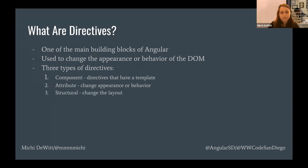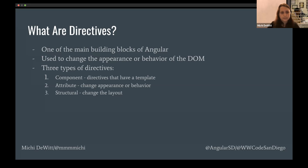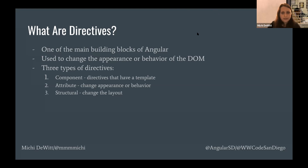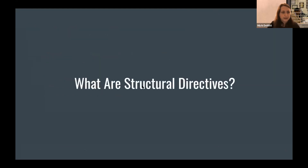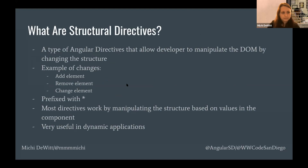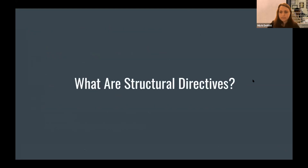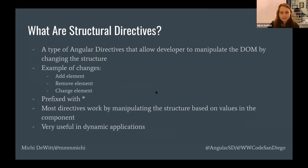The second type is an attribute directive, used to change the appearance or behavior of the DOM. And then the third, which is the topic of our conversation tonight, are Structural Directives. Those are used to change the structure of the layout.